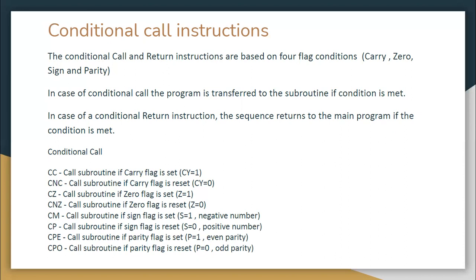Conditional call and return instructions are based on mainly four flag bits: carry, zero, sign, and parity. In case of a conditional call, the program is transferred to the subroutine only if the condition is met; otherwise it is skipped and the next instruction in the main program is executed.